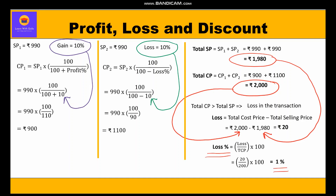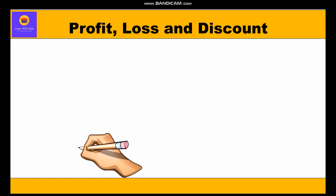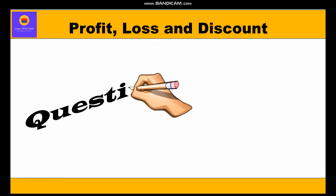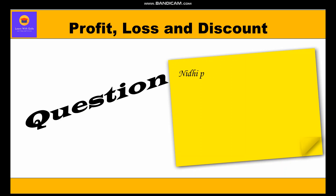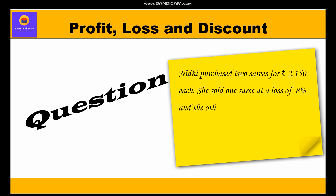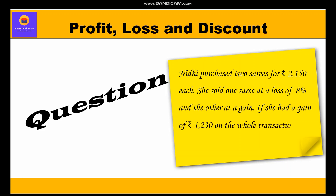Now let's take up the second question. Nidhi purchased two saris for rupees 2150 each. She sold one sari at a loss of 8 percent and the other at a gain. If she had a gain of rupees 1230 on the whole transaction, find the selling price of the second sari.